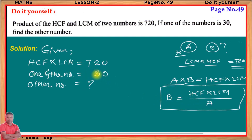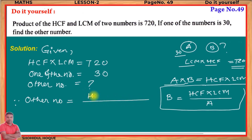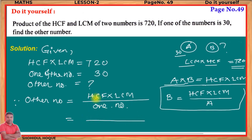Applying this formula to find the other number b: one of the numbers is 30, so a = 30, and the value of HCF × LCM is 720. Therefore, other number = (HCF × LCM) ÷ one number = 720 ÷ 30.